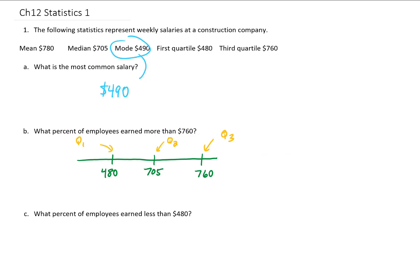But this question is, what percent of employees earned more than $760? That would be represented by this part of the data over here. And as we learned, quartiles split up our data into 25% segments. So this segment of the data, salaries greater than 760, represents 25% of the whole data set. And that is the answer to our question.